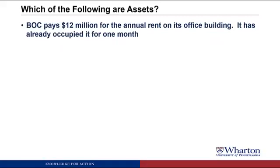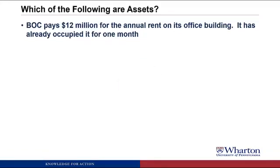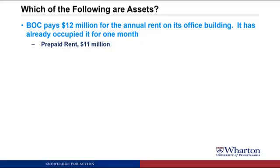BOC pays $12 million for the annual rent on its office building and has already occupied it for one month. This is an asset — we're going to call it prepaid rent. It meets the first criteria because in a market transaction, we paid for the right to occupy space in this office building for 12 months. But note that at this point, the value of the benefits is only $11 million, not the $12 million we paid, because we've already used up one month of future benefits. So we have prepaid rent worth $11 million.